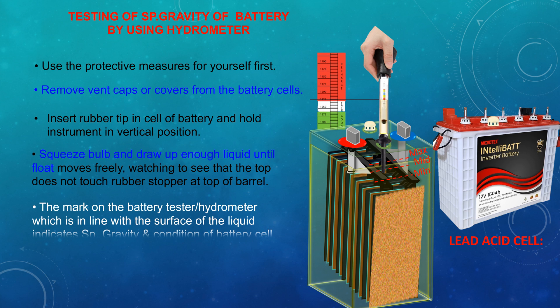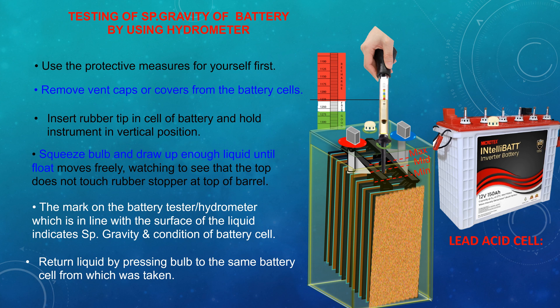The mark on the battery tester or hydrometer which is in line with the surface of liquid indicates specific gravity and condition of the battery cell. Return liquid by pressing the bulb to the same battery cell from which was taken.